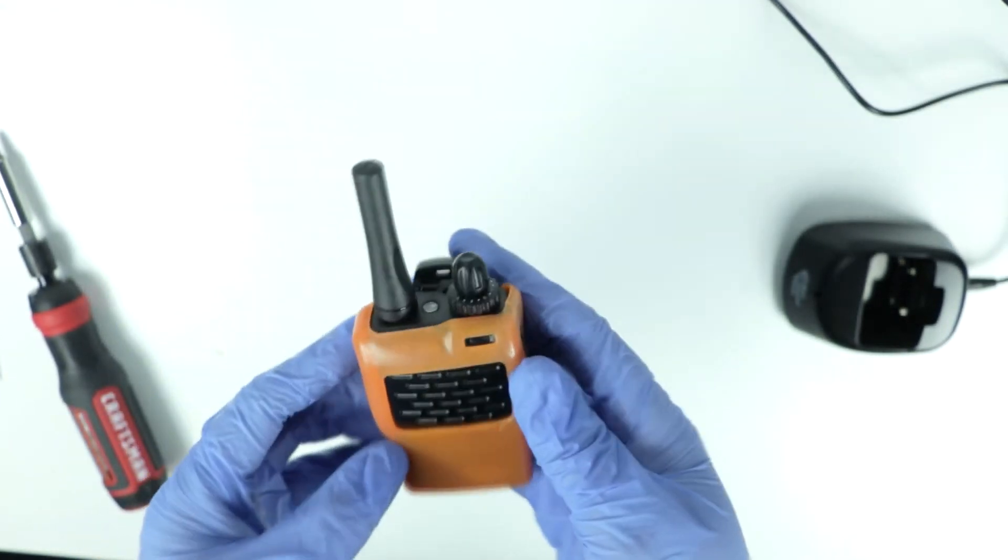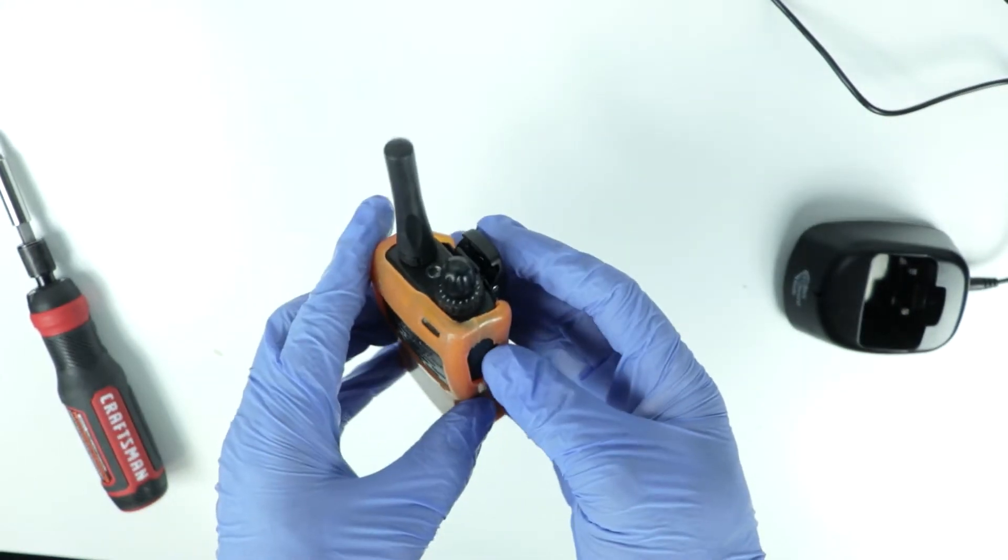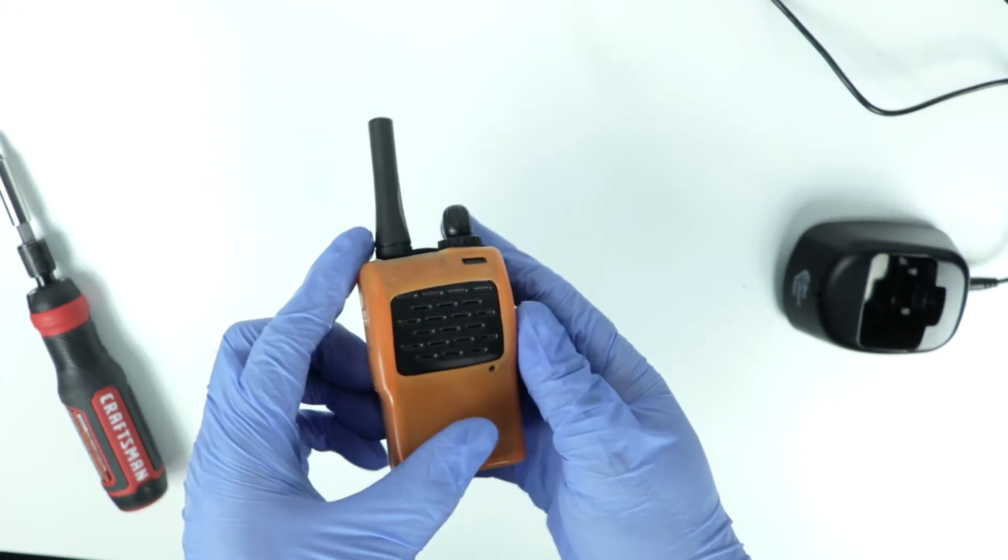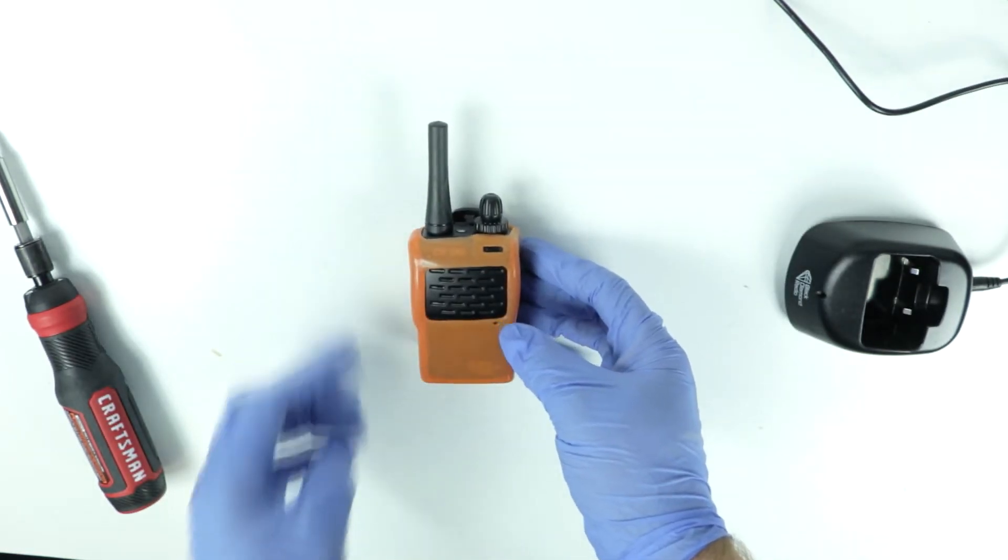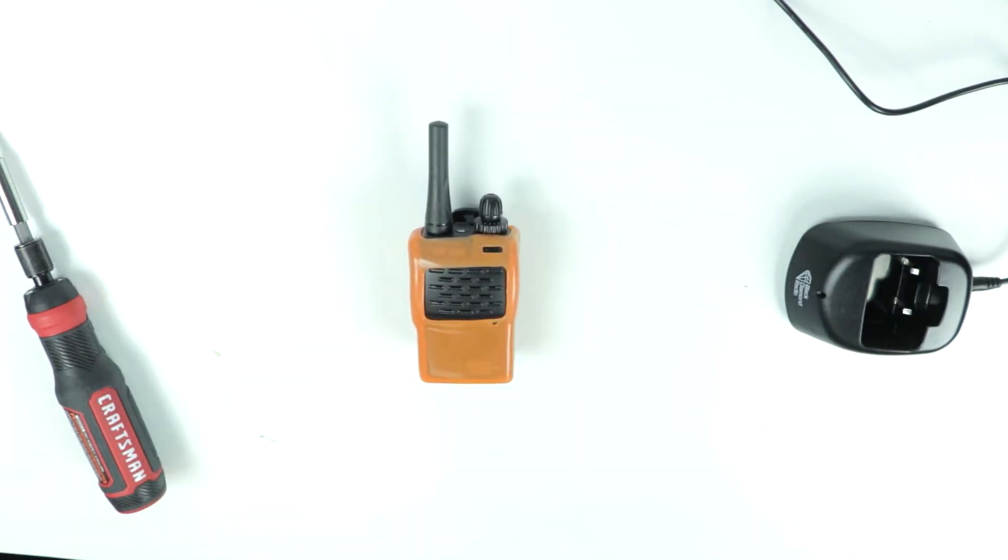Okay so why do we put a skin on the radio? There are actually three reasons for that. Reason number one being shock protection. These are very tough radios, but it never hurts to have a little bit of extra protection. The second reason is that it makes it a lot easier to drop it in the charger. The charger is designed to accommodate a case, so without the case the radio fits kind of loosely in the charger, and that means you have to finagle it a little bit to get it to charge. With the skin on there, you can just drop it right in.